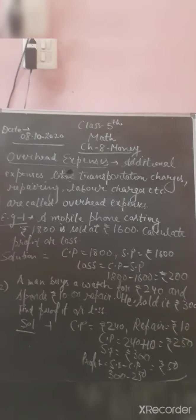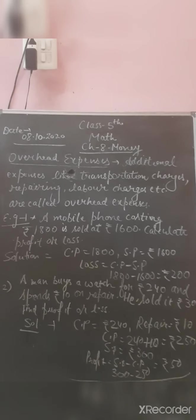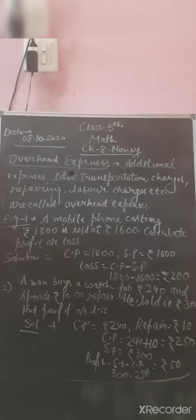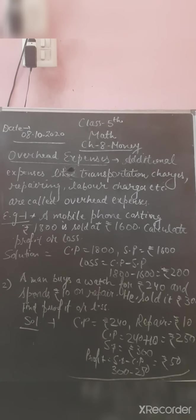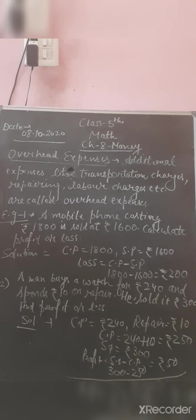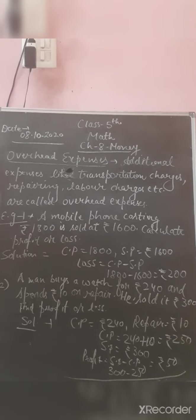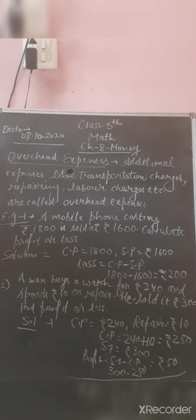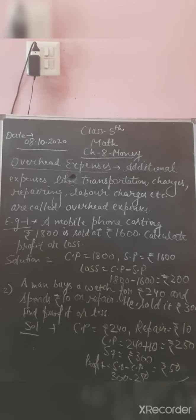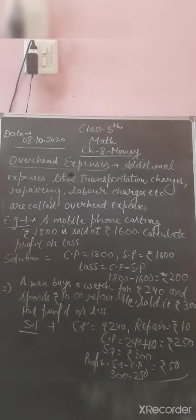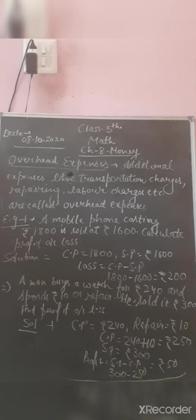Before solving examples, one more thing: overhead expenses are additional expenses like transportation charges, repairing charges, labor charges, etc. Suppose you purchased something and spent some amount on its repair or labor — that amount is included in the cost price. Let me explain with examples.